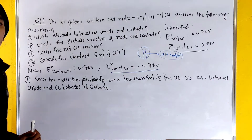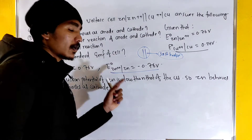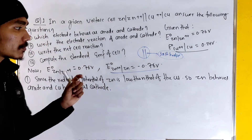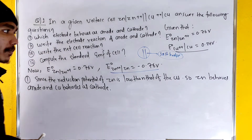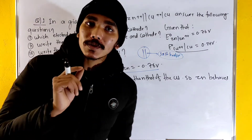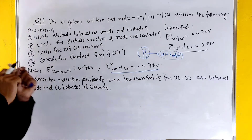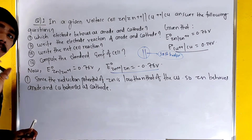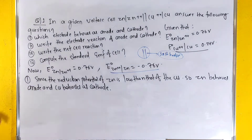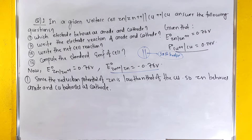The electrode with low reduction potential behaves as anode, and the electrode with high reduction potential behaves as cathode. So we are going to write the electrode reactions.